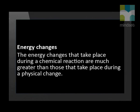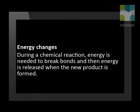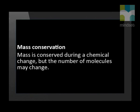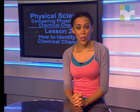To end this lesson, let's highlight some of the important properties of a chemical change. In a chemical change, the particles rearrange and combine in new ways. The energy changes that take place during a chemical reaction are much greater than those that take place during a physical change in matter. During a chemical reaction, energy is needed to break bonds and then energy is released when the new product is formed. In terms of reversibility, chemical changes are far more difficult to reverse than physical changes. During a chemical change, mass is conserved but the number of molecules may change. Next time, we will explore what we mean when we say the number of molecules may change but the number of atoms stays the same.